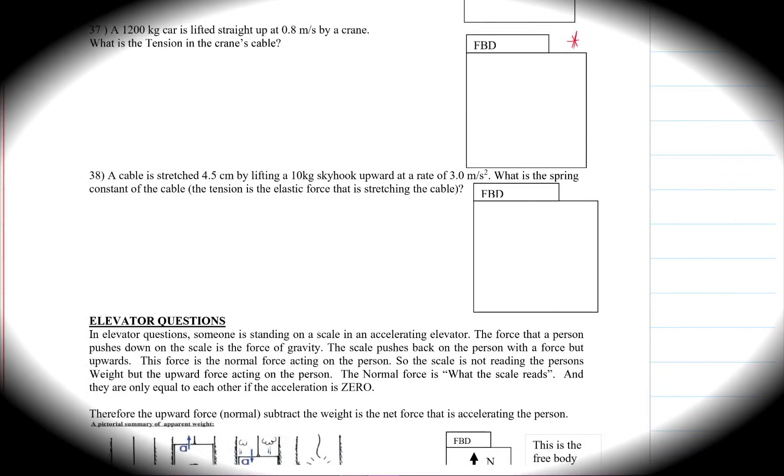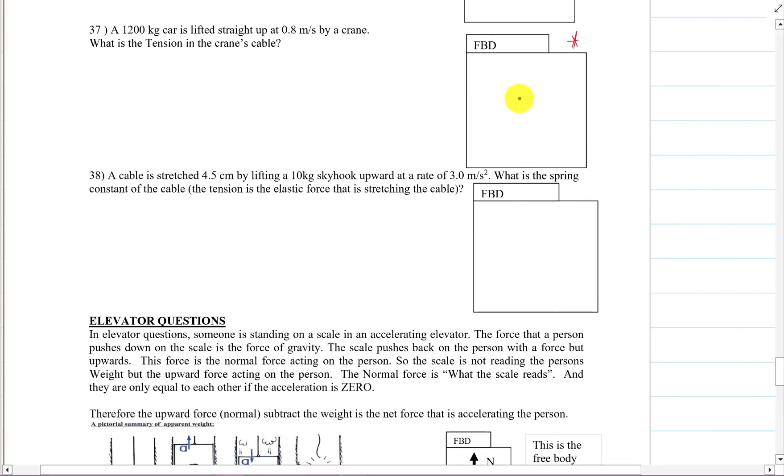Let's begin. Here we go. So we'll draw a free body diagram. So we have the tension and the force of gravity and it's moving up. But its acceleration is zero. It doesn't say that it's changing its speed.